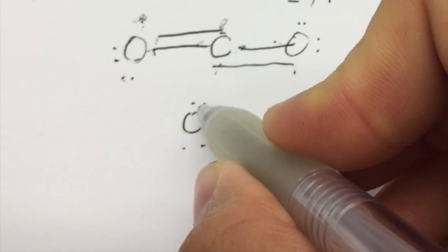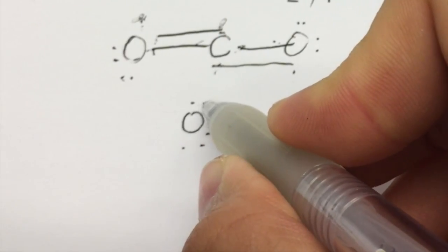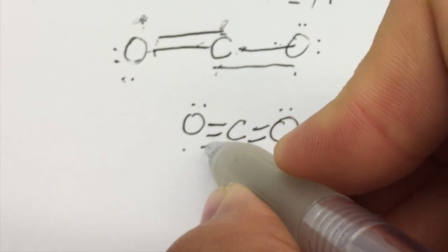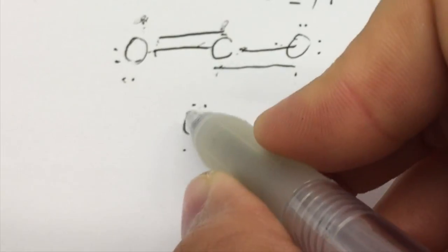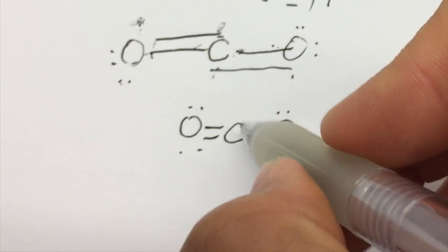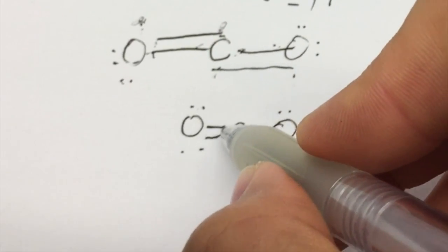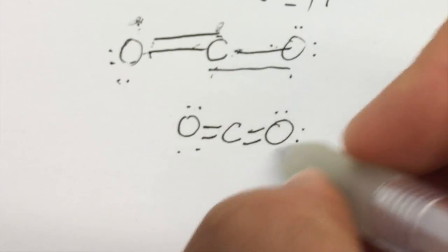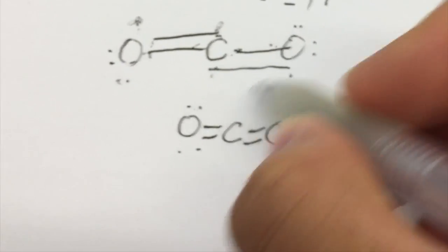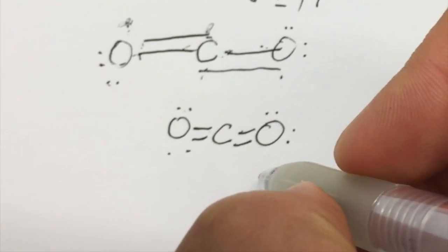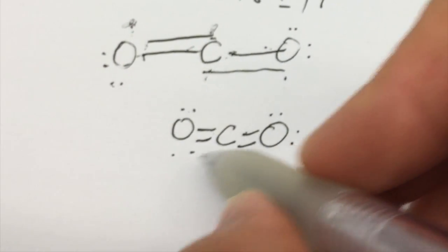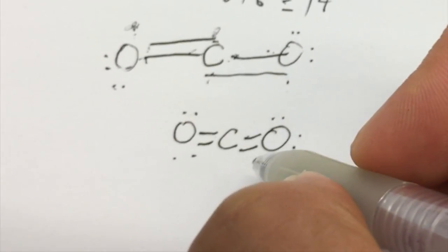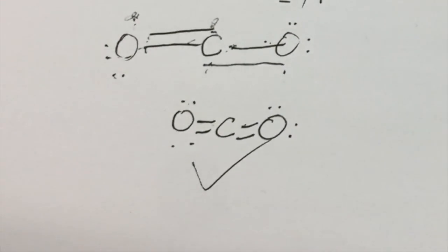Let's count the electrons: oxygen on each side has 8 electrons, and carbon has 4 bonds × 2 = 8 electrons. They are all satisfied — they all have 8. So this Lewis diagram is correct.